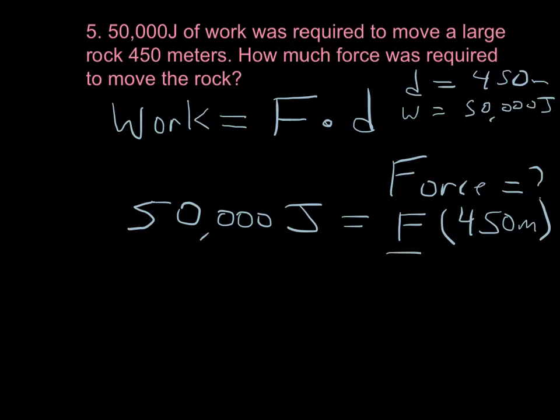Our variable is being multiplied by a coefficient of 450. So, I'm going to do the inverse, which is to divide. What I do to one side of the formula, I must do to the other. So, I'm dividing both sides of the formula by 450 meters.